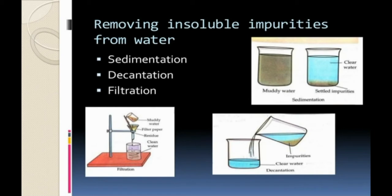There are three methods to separate insoluble impurities from water: sedimentation, decantation and filtration. In sedimentation, let water stand for some time — impurities heavier than water settle at the bottom, leaving the water clear. In decantation, slowly pour out the clear water into another vessel. In filtration, filter paper is used to filter the water.